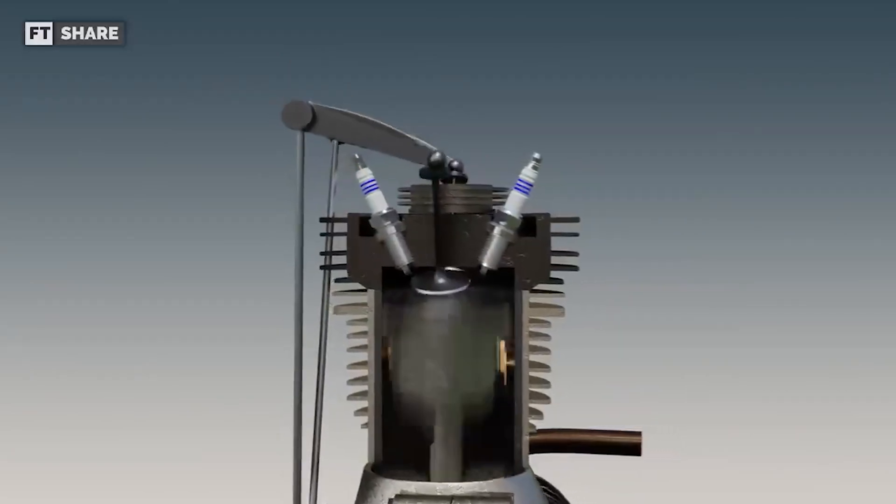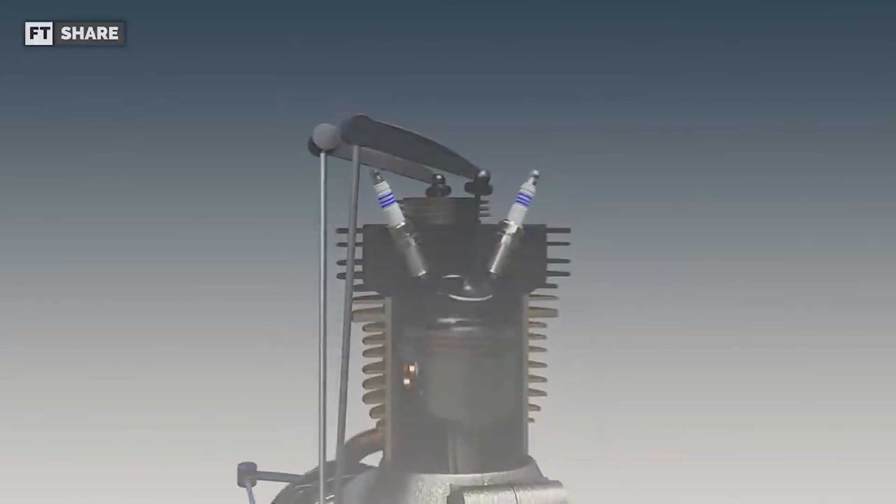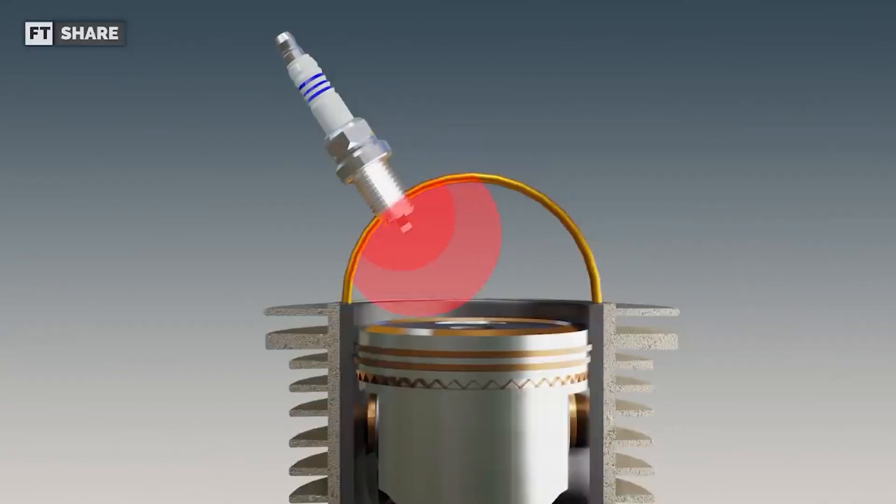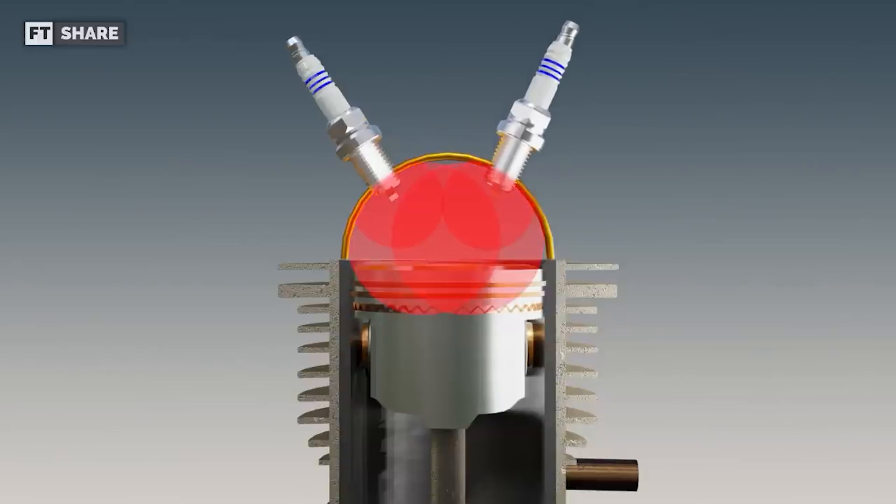So, to keep the RPMs high without changing the firing order timing, one way to do this is by speeding up the combustion process, not by adding extra combustion interval. This can be done by using two spark plugs at once, which will help with this combustion process.